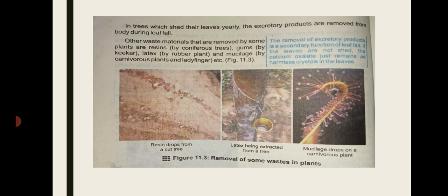The removal of excretory products is a secondary function of leaf fall — basically, excretory products are removed through leaf fall. If the leaves are not shed, then calcium oxalate simply remains as harmless crystals inside the leaves.